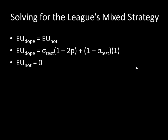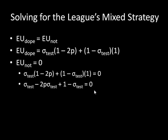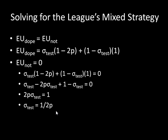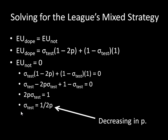The last step is to set these two expected utilities equal to each other and solve for sigma_test. Setting the EU for doping equal to zero and simplifying, you eventually get sigma_test equals one over two P. To answer our question: as P increases, one over two P decreases. So the probability of testing is decreasing in P — you test less frequently as the quality of the test increases.